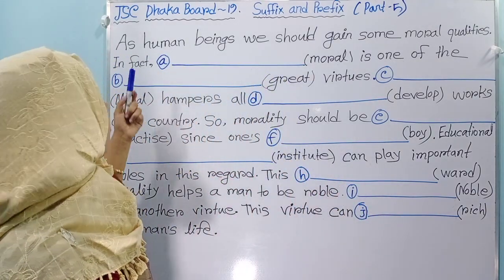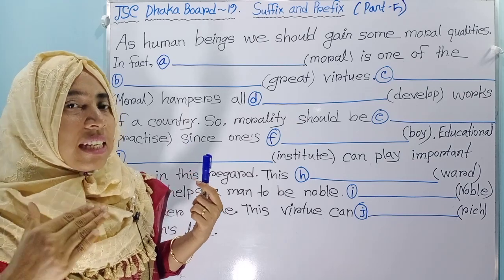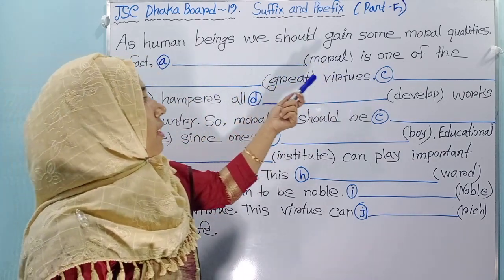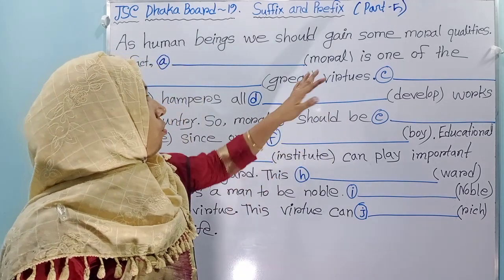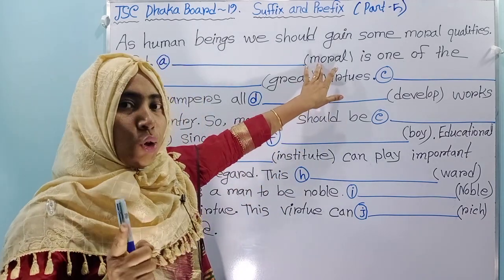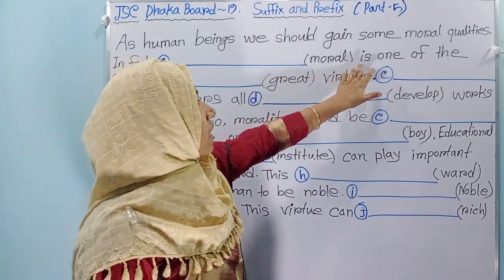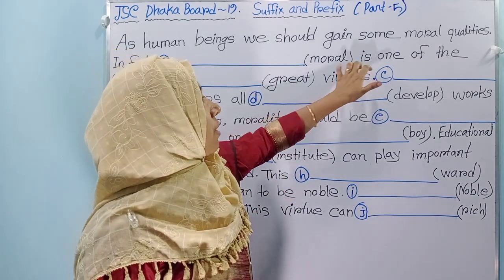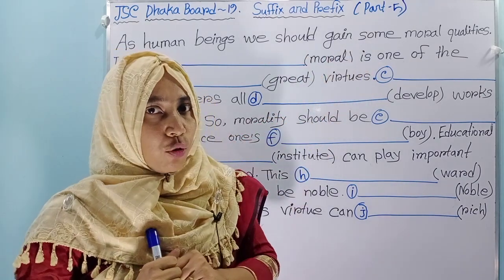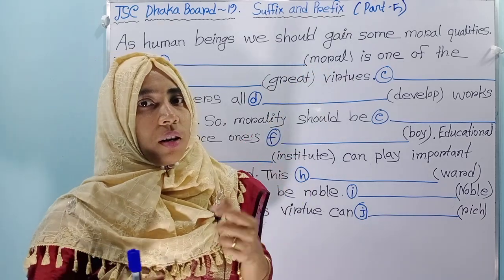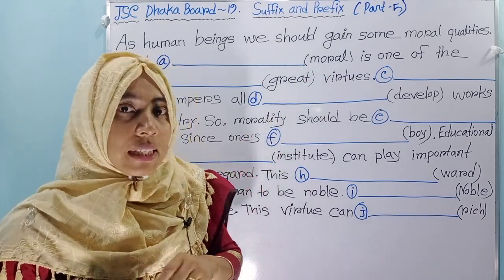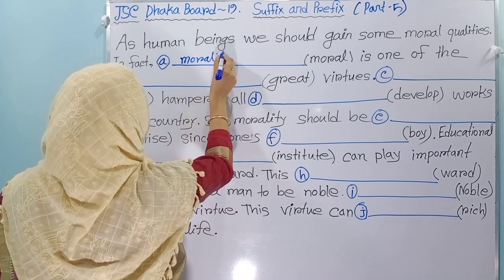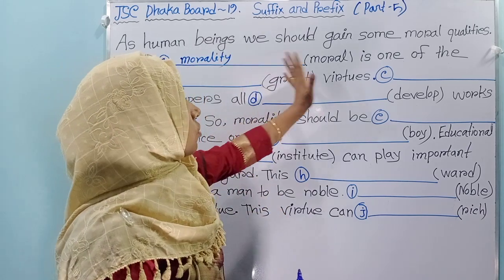Here you see — in fact, really, indeed — that moral is one of the greatest virtues. What is our target word? Moral. And after moral, this is about a verb. Before any verb, you have to use a noun. So what is the noun form of moral? Morality. Here you have to use morality.